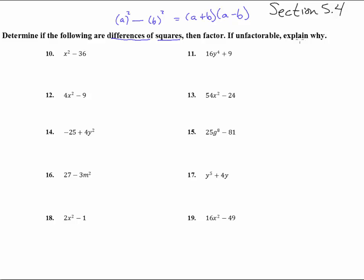So then factor. If unfactorable, explain why. So we have a subtract sign, we have an x squared, and that's a 6 squared. So that's going to be x plus 6, x minus 6. Bingo! That's it! And you can multiply it back together and see the magic happen when you multiply those.